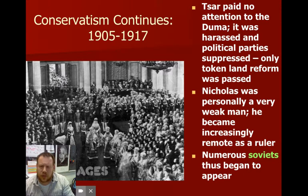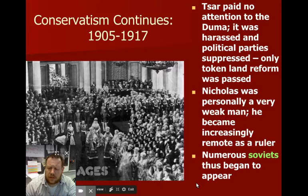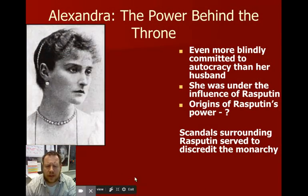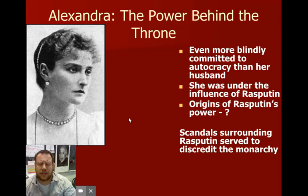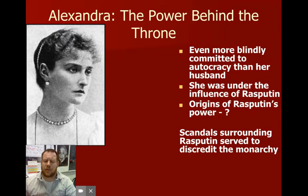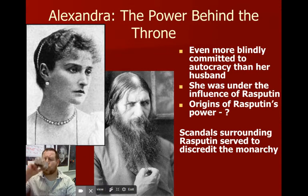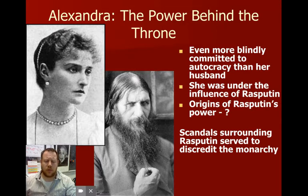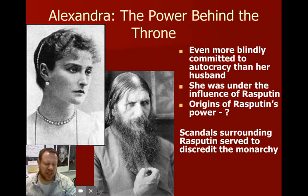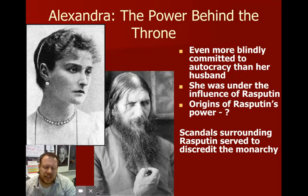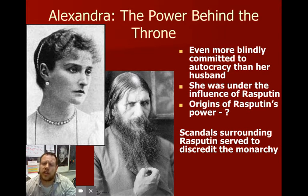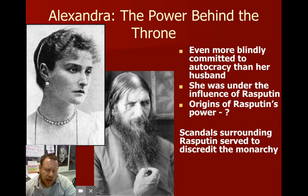Soviets were groups of people that kind of ruled themselves in a city or town. Now, people argue that Alexandra the Tsarina was actually the power behind Nicholas. She was very committed to autocracy. She was also hanging out with this guy named Rasputin — kind of a weird, scruffy-looking monk or holy man from out in Siberia. He was known for looking all nasty and scraggly, and there were a lot of scandals involving his relationship with various women. He supposedly had a magical power, and there were a lot of rumors about how much influence he had with the Tsarina.